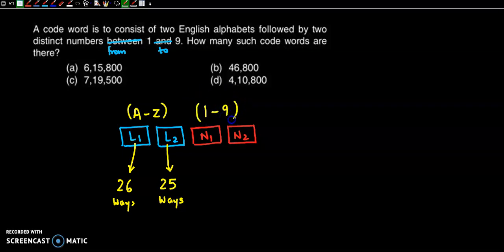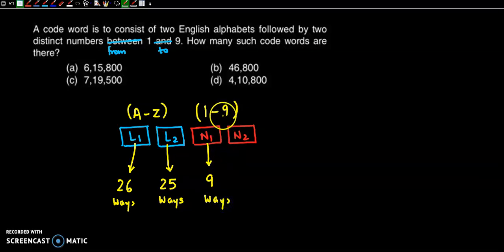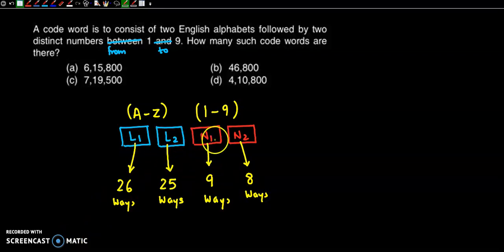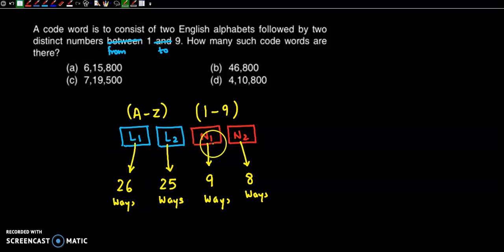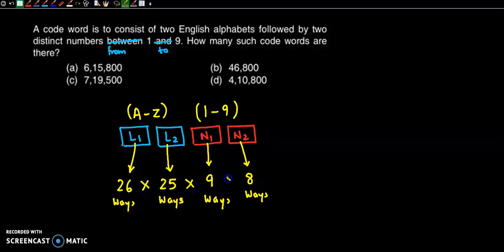We have numbers 1 to 9, so the first number can be chosen in 9 ways. After choosing one, the second number can be chosen in 8 ways. All four steps — L1, L2, N1, N2 — are compulsory, so we multiply the number of ways using the fundamental principle of multiplication. Filling all four positions gives us the total number of code words.